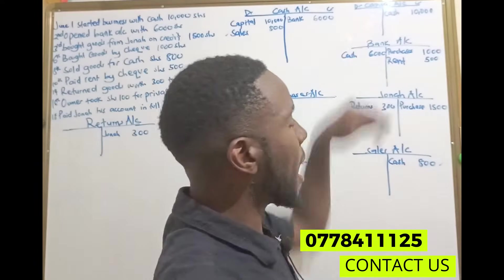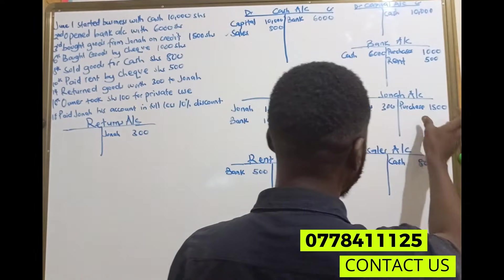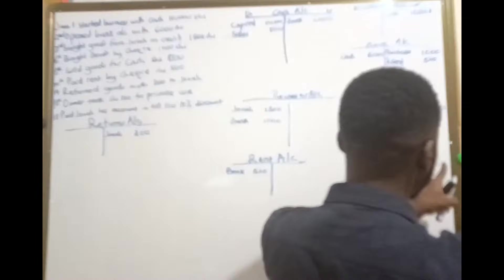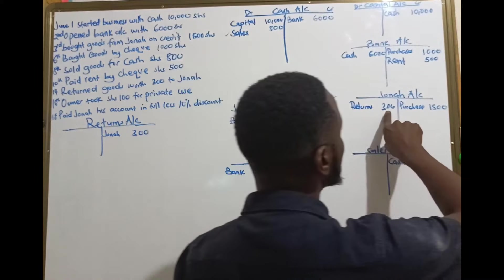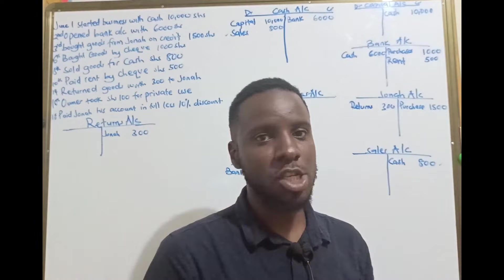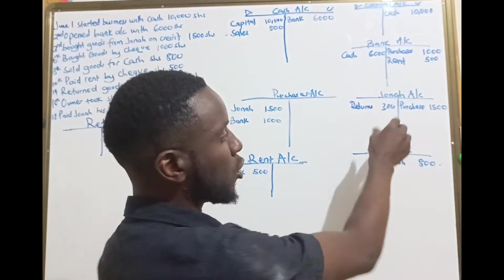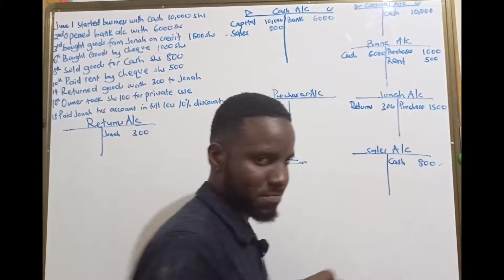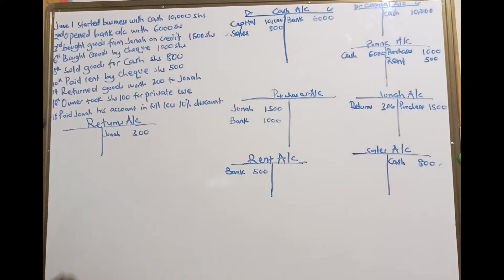When we come to Jonah's account, if we took goods on credit — these were the things we took, that's why we put them on the credit side. But we are returning to him goods worth 300. That means if we are to pay our balance, we are not going to pay the 1,500 because we returned goods worth 300.